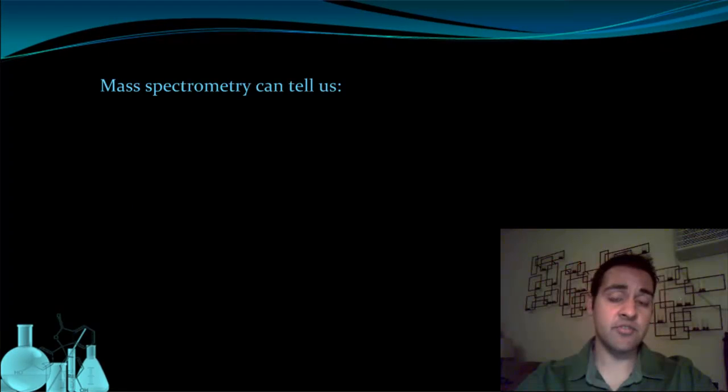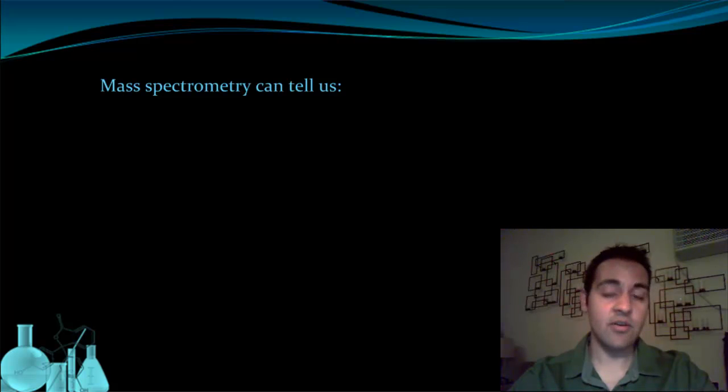In the last video, we introduced isotopes and what a mass spec does. Recall that a mass spec can figure out the mass of particles in a sample. As it turns out, we are able to determine the amount of isotope in a sample by using a mass spec.